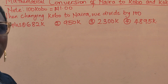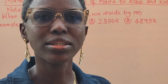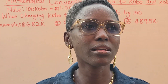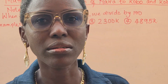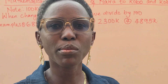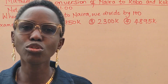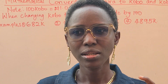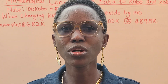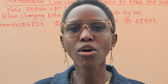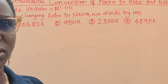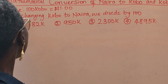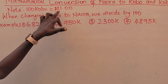Why is this skill important? Sometimes you are given a question involving division, and you are supposed to divide with kobo but you are given naira. For example, 25 naira divided by 5 kobo — you will not be able to divide appropriately if you don't know how to convert, because both values must be in the same units.